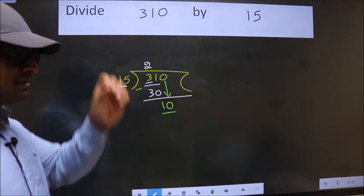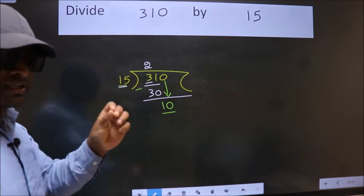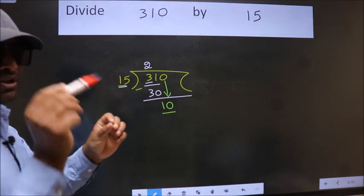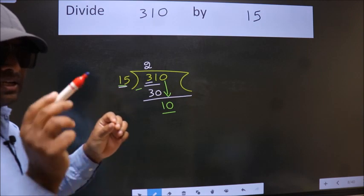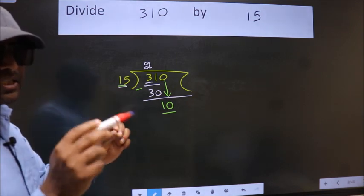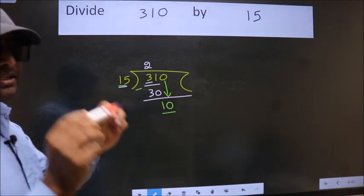I repeat: Bring down the number and also put dot, take 0. Bring down the number and put dot, take 0. Both at the same step you should not do.